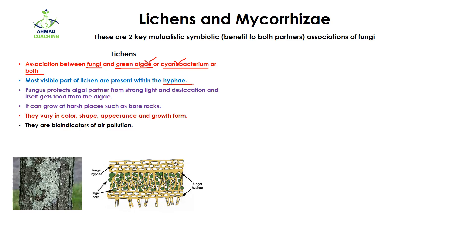You can see in this diagram that this part here is actually the fungal hyphae, while the fungal hyphae has entrapped the algae cells. You can see this green part — these are actually green algae. In this way the hyphae of fungi and green algae are making an association.